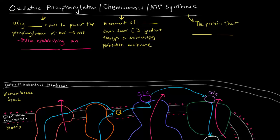Now, what is oxidative phosphorylation? Just as a sort of definition, it's basically using redox reactions to power the phosphorylation of ADP into ATP.